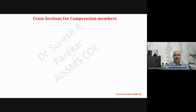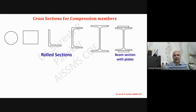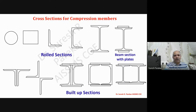Similarly we have cross sections for compression members. All sections are mostly similar to tension members, except cables are not considered. Compression members carry much more load than tension members, so more built-up sections are used. We can have a beam section with plates, angles on opposite sides of a gusset plate, star angles, channels back-to-back, channels face-to-face, beam with cover plates, and beam with channel sections — depending upon the compression load.